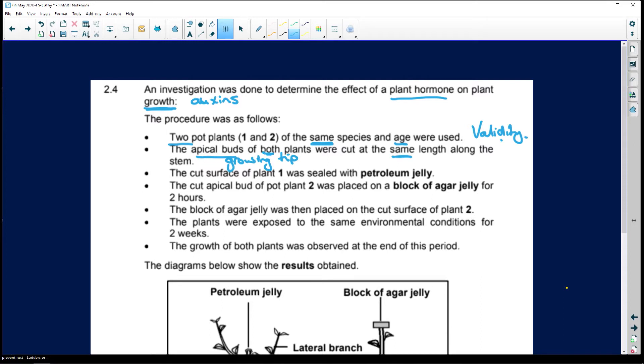The cut surface of plant one was sealed with petroleum jelly. The cut apical bud of pot two was placed on a block of agar jelly for two hours. You must remember agar jelly is a gel substance that allows substances to diffuse in and out of it.